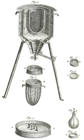Lavoisier dubbed this apparatus the calorimeter, based on both Greek and Latin roots. One of the first ice calorimeters was used in the winter of 1782 by Lavoisier and Pierre-Simon Laplace, which relied on the heat required to melt ice to water to measure the heat released from chemical reactions.